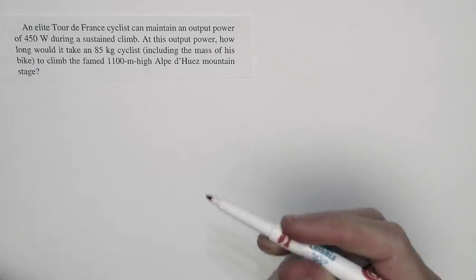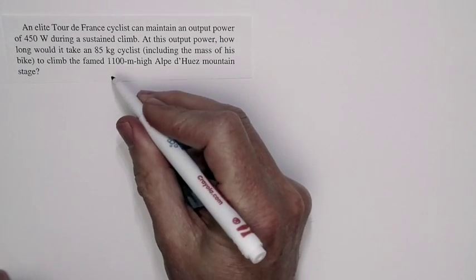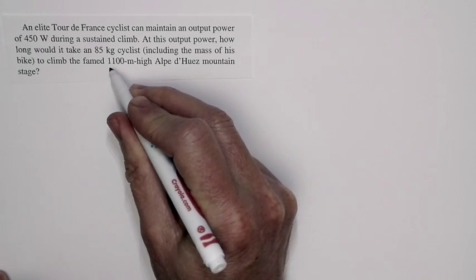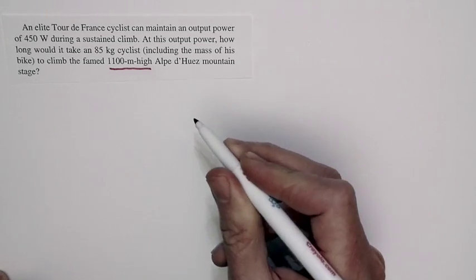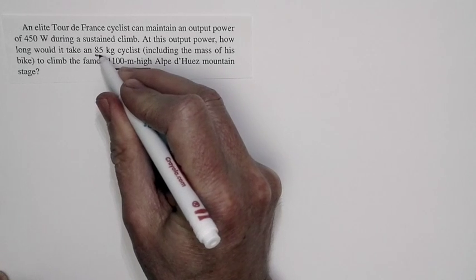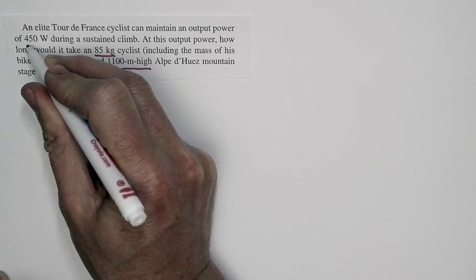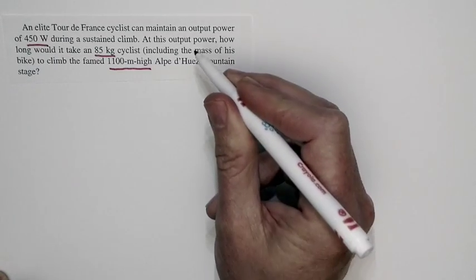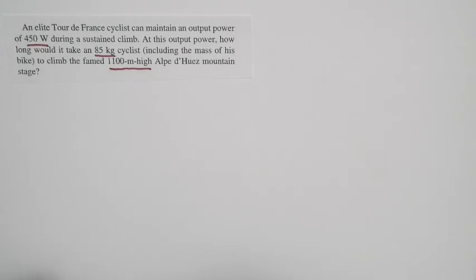This problem asks about the time for a cyclist to climb a particular stage in the Tour de France. It's 1,100 meters high. The cyclist has a mass of 85 kilograms and is climbing with a sustained output power of 450 watts.